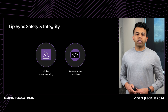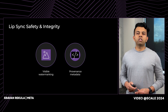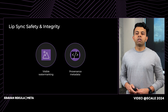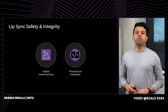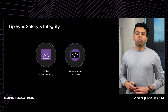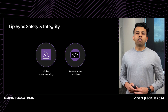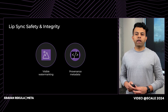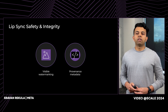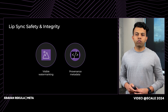The second measure is provenance metadata, an emerging standard in the industry we have incorporated to provide users with information about any modifications made to a piece of media using AI. To further protect against manipulation when sharing off-platform, we have implemented these measures for videos downloaded from our platform.